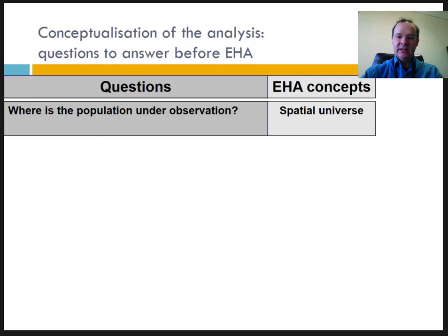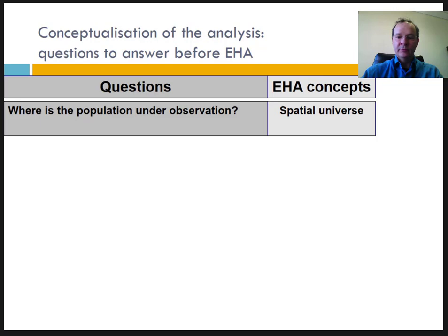In HDSS, the spatial universe is pretty straightforward to define — it is limited by the HDSS boundaries. But in cohort studies, it is more tricky. Often, the spatial universe is defined by follow-up visits, either at the health facility or at the respondent's home. The spatial limits are vague — more institutional — and conditional on follow-up. The notion of a catchment area might be useful for cohort studies.